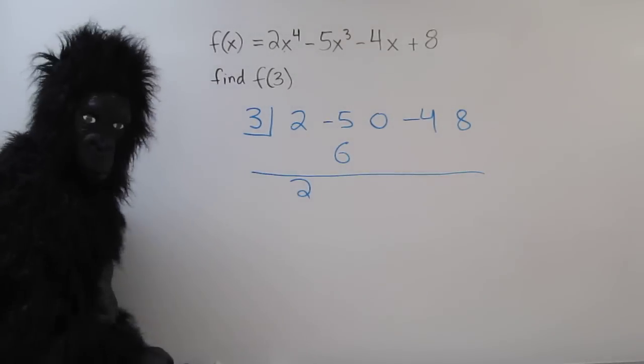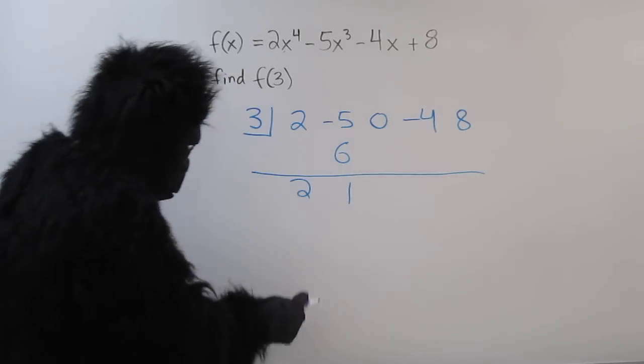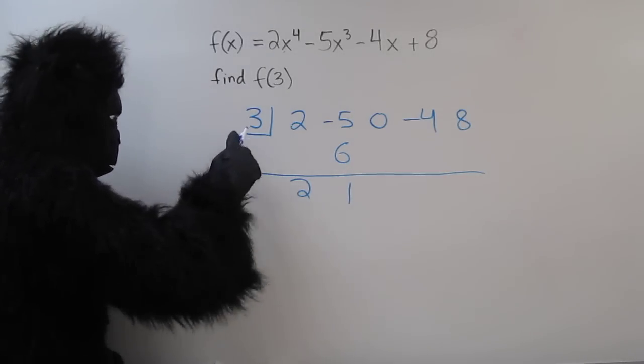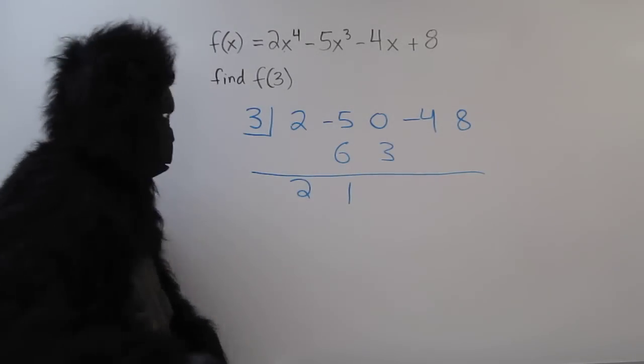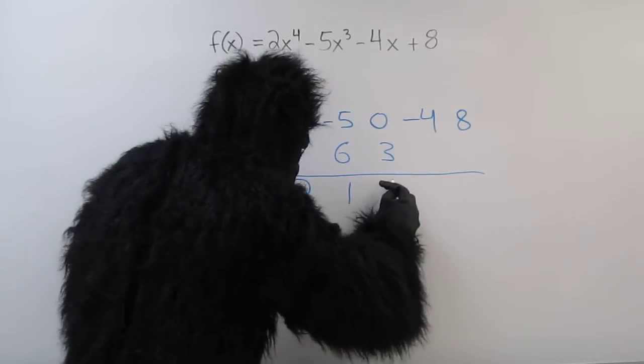Now negative 5 plus 6 is 1. Now we multiply again. 1 times 3 is 3. Now we add. 0 plus 3 is 3.